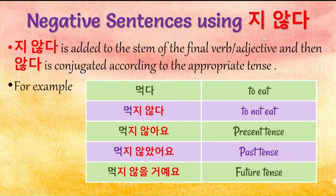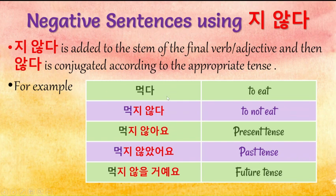Now let's move ahead and see how to use 'ji antha' to make negative sentences. As I said earlier, 'ji antha' is added to the stem of the final verb or adjective, and then 'antha' is conjugated according to the appropriate tense. We know the conjugation rules, so it becomes very easy. For example, we have the verb 'mokta', which means 'to eat'. If you want to turn it into a negative form, it will become 'mokti antha', meaning 'to not eat'. Conjugated in the present, past, and future tense, it will become 'mokti anayo', 'mokti anasayo', and 'mokti analkoyayo'.